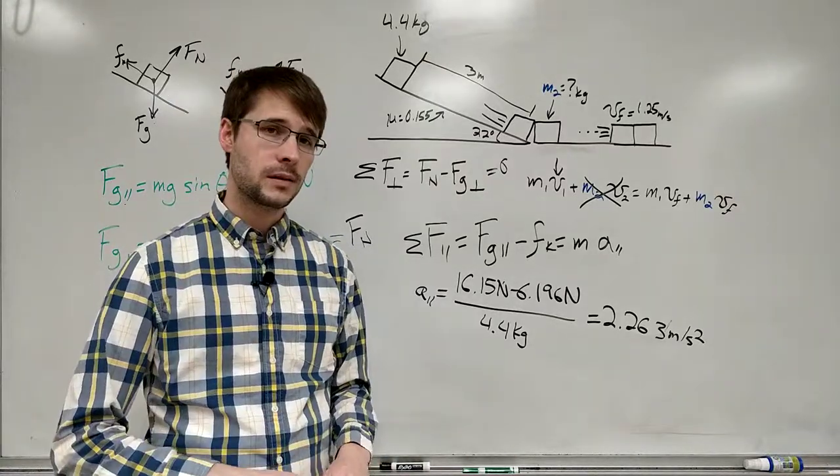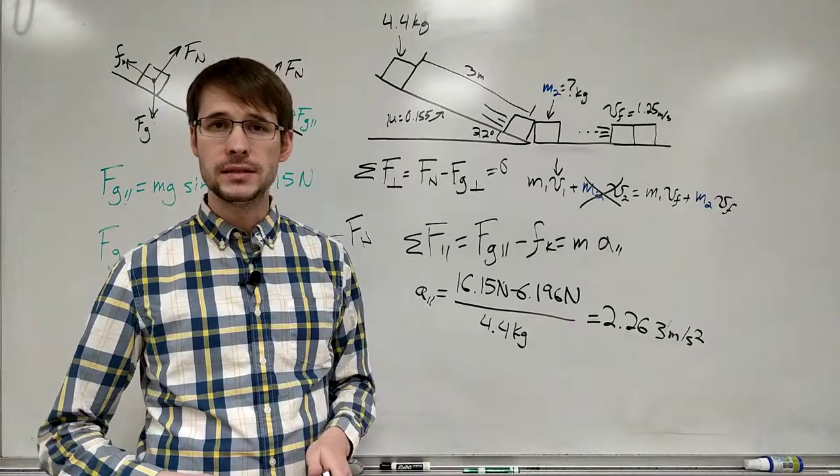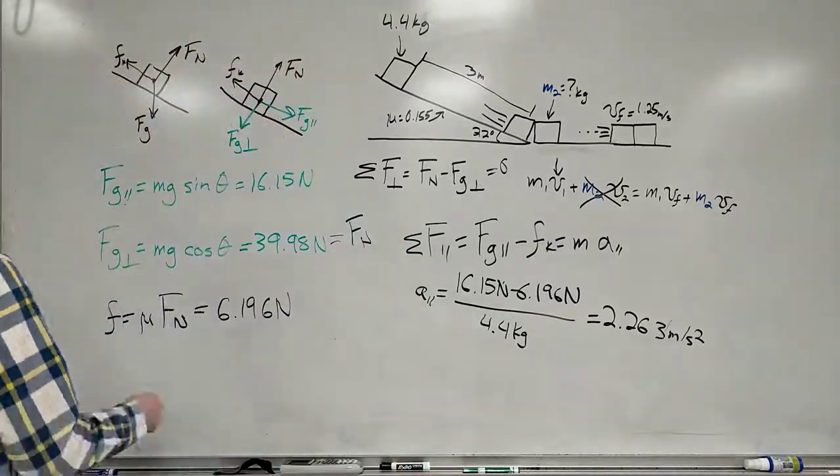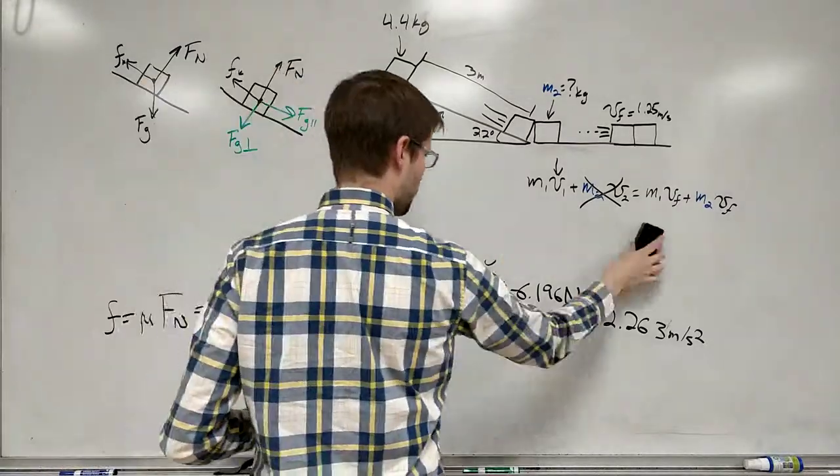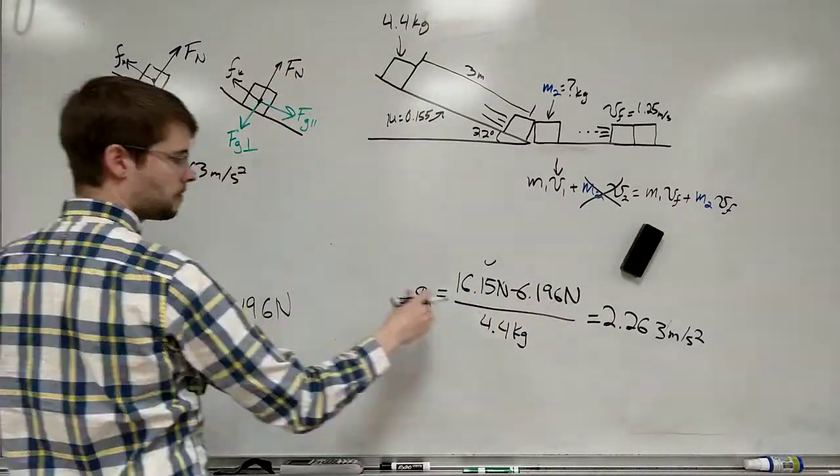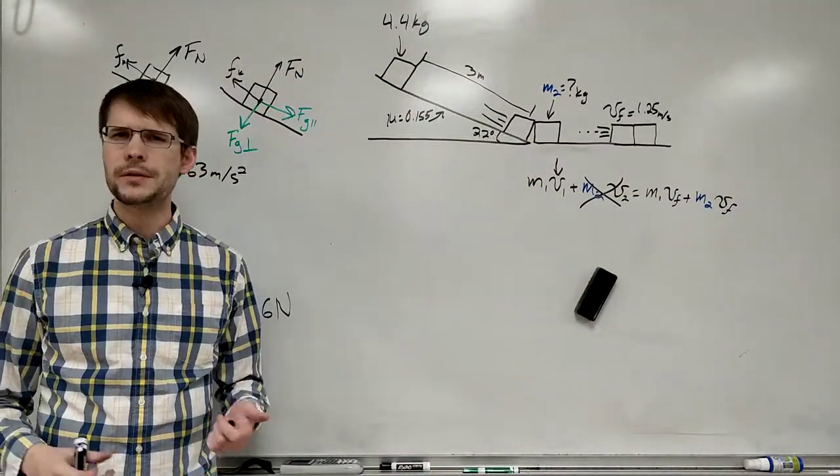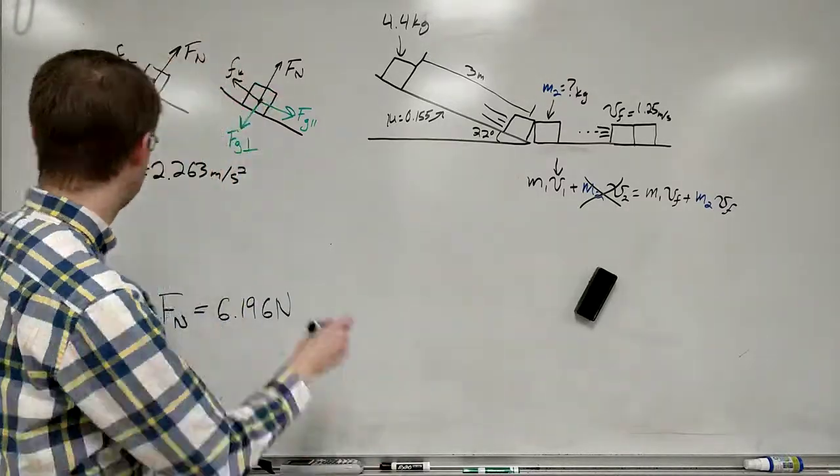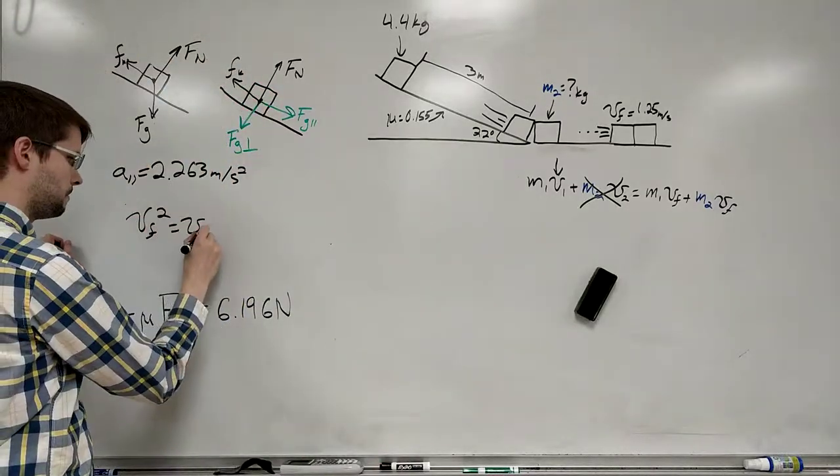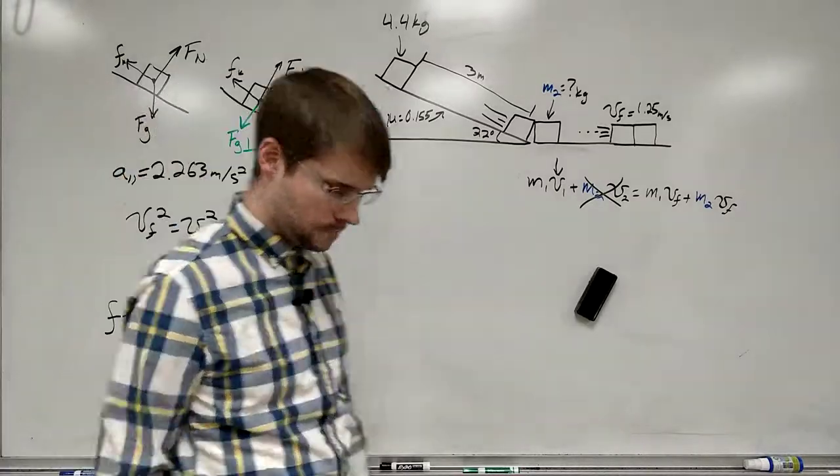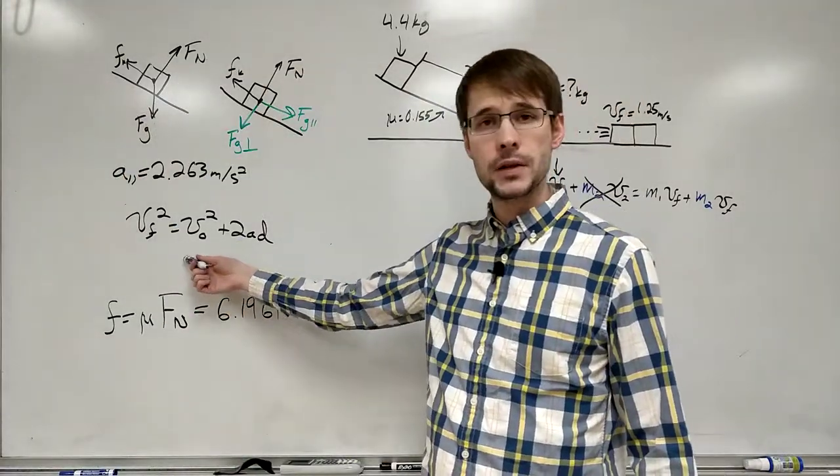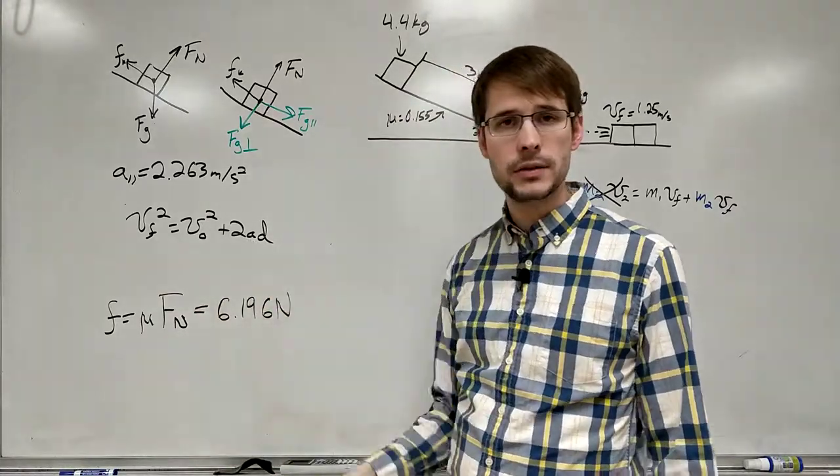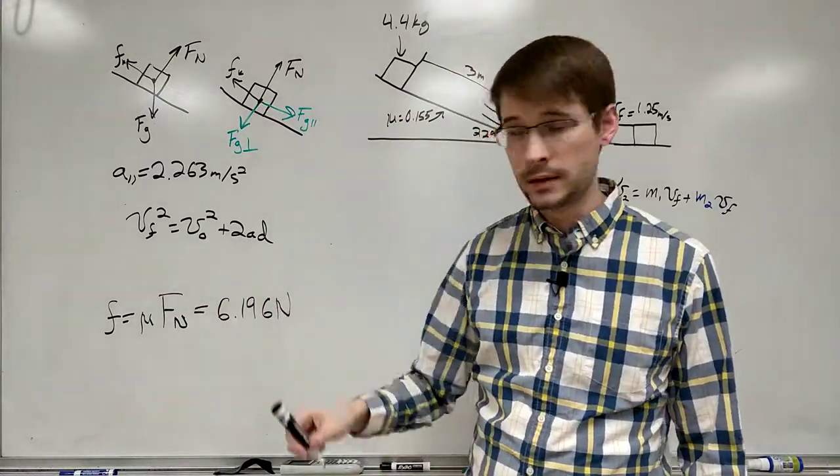There's only one of our kinematic equations that doesn't use the time. So the only one without the time, that's our v squared equation. So let's put that up here. And the initial velocity is zero, final velocity is what we're looking for. We just calculated the acceleration and the distance was given. So let's plug it in.